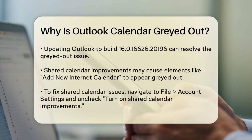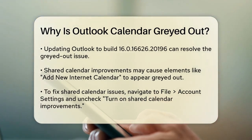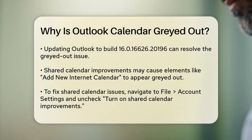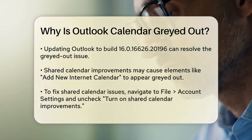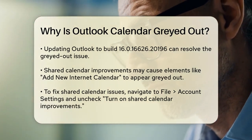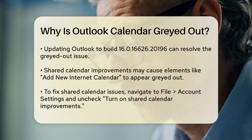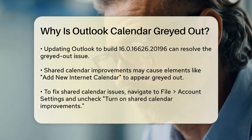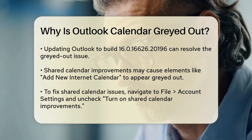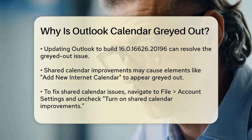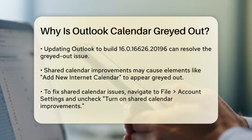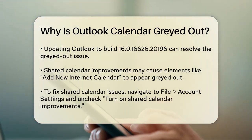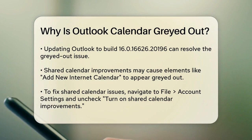The issue has been resolved in Outlook Build 16.016626.2196, so updating your Outlook might solve the problem. Another reason for grayed out elements could be related to Shared Calendar improvements. If you've enabled Shared Calendar improvements, it might cause issues like the Add New Internet Calendar option being grayed out.